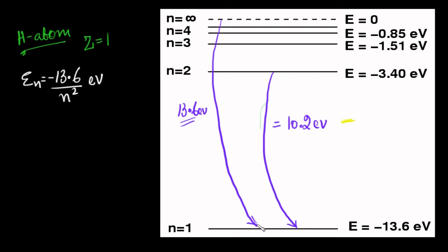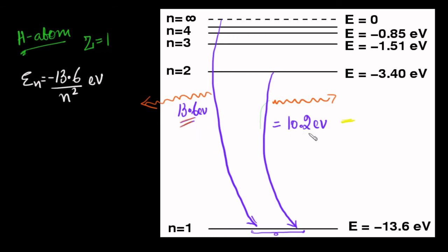Without any other transition, if we want the electron to land at n equals 1, the maximum possible energy loss is 13.6 eV (from infinity), and the minimum is 10.2 eV (from n=2). Any other transition — 3 to 1, 4 to 1, 5 to 1 — will have energy loss between 10.2 and 13.6 eV. This energy loss is emitted as electromagnetic radiation, so all these radiations correspond to energies between 10.2 and 13.6 electron volts.